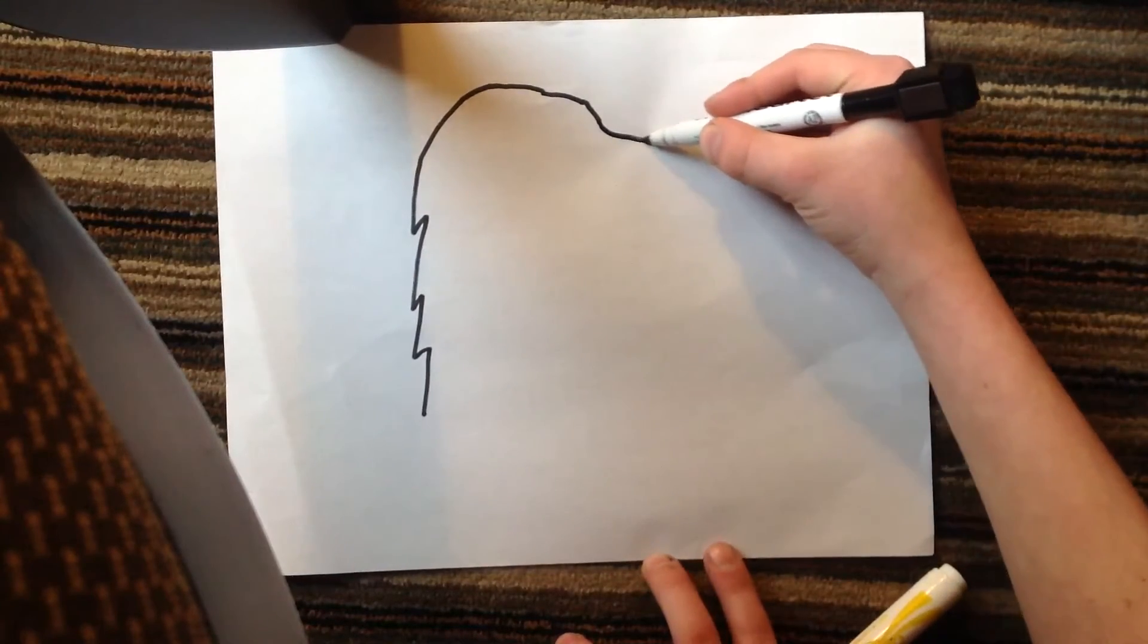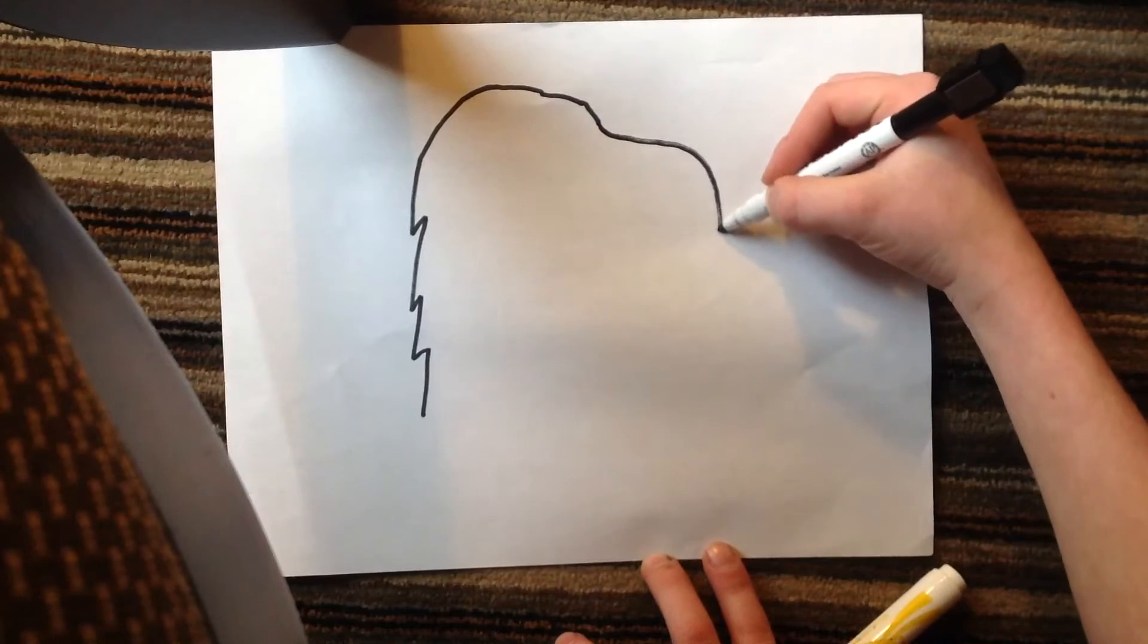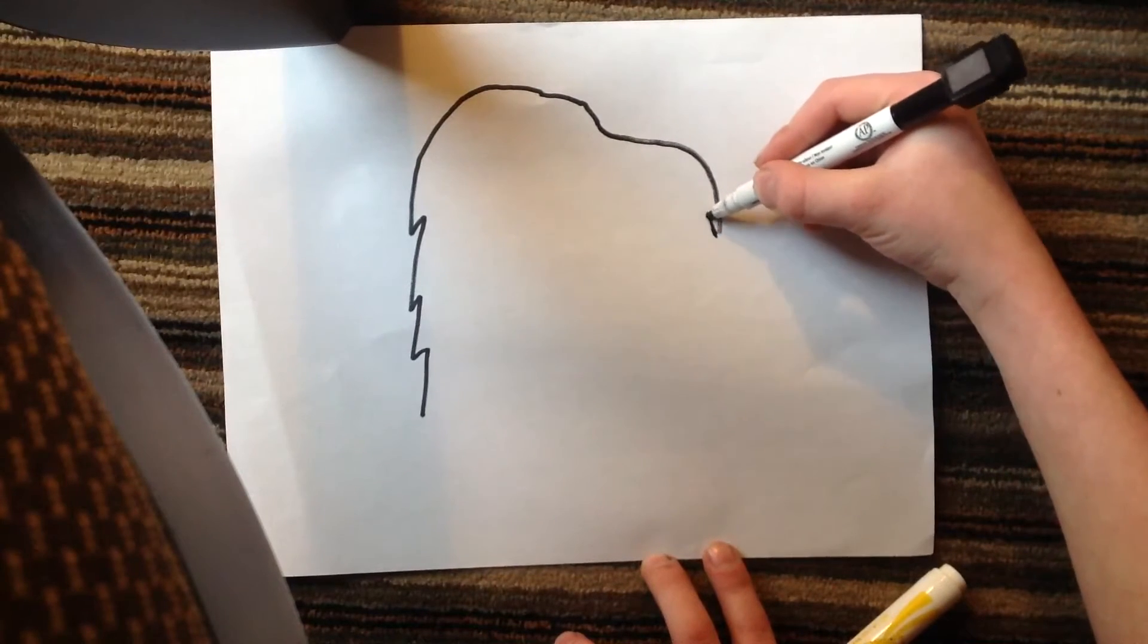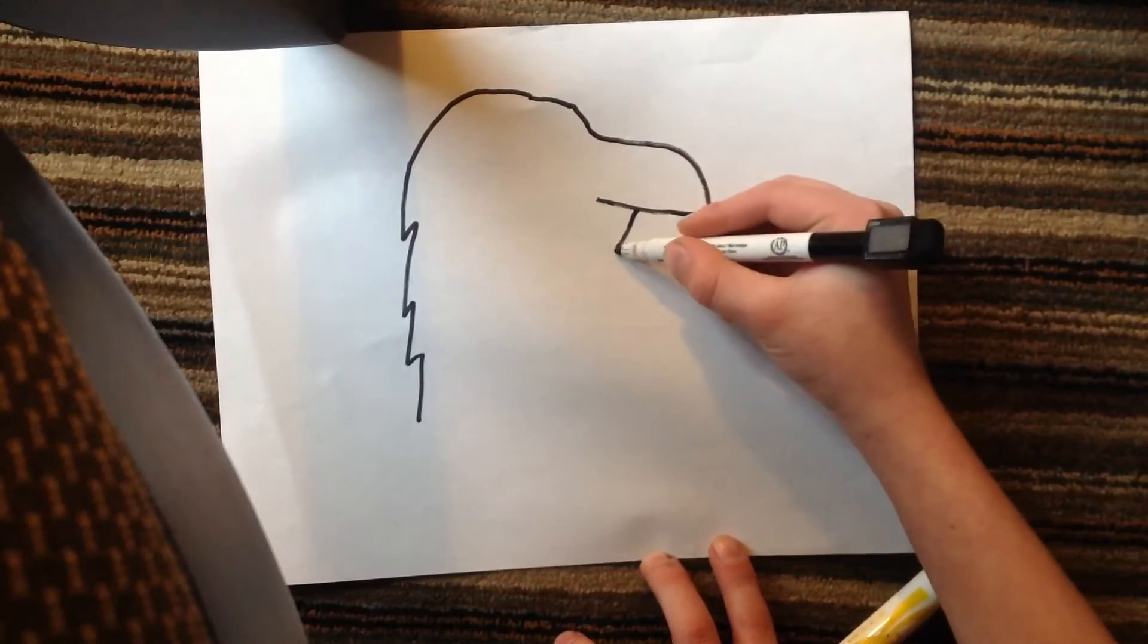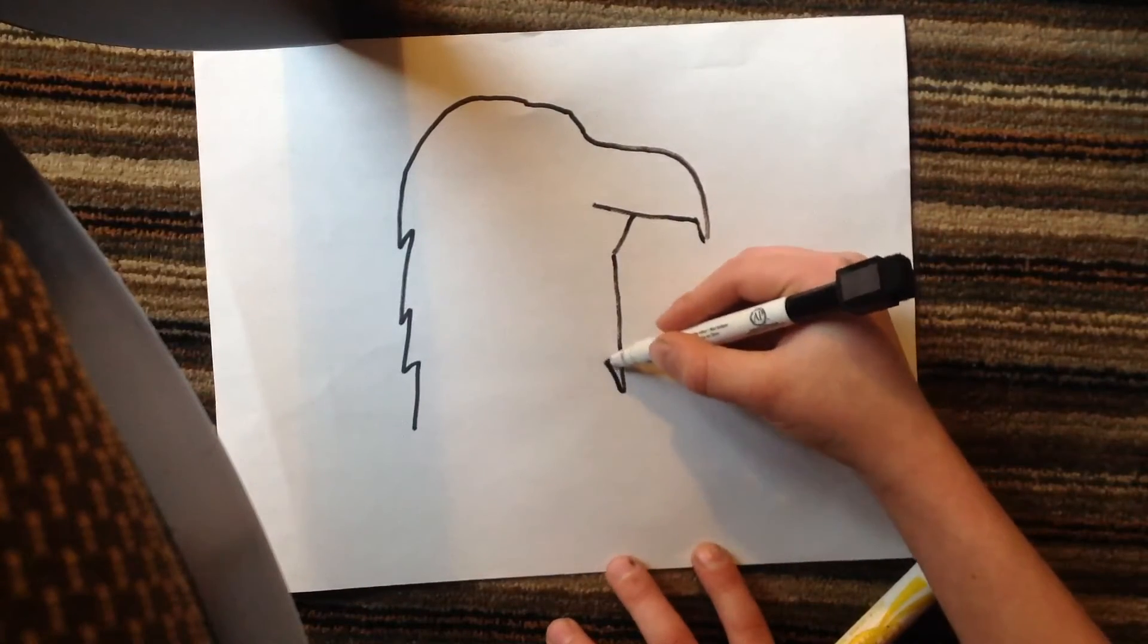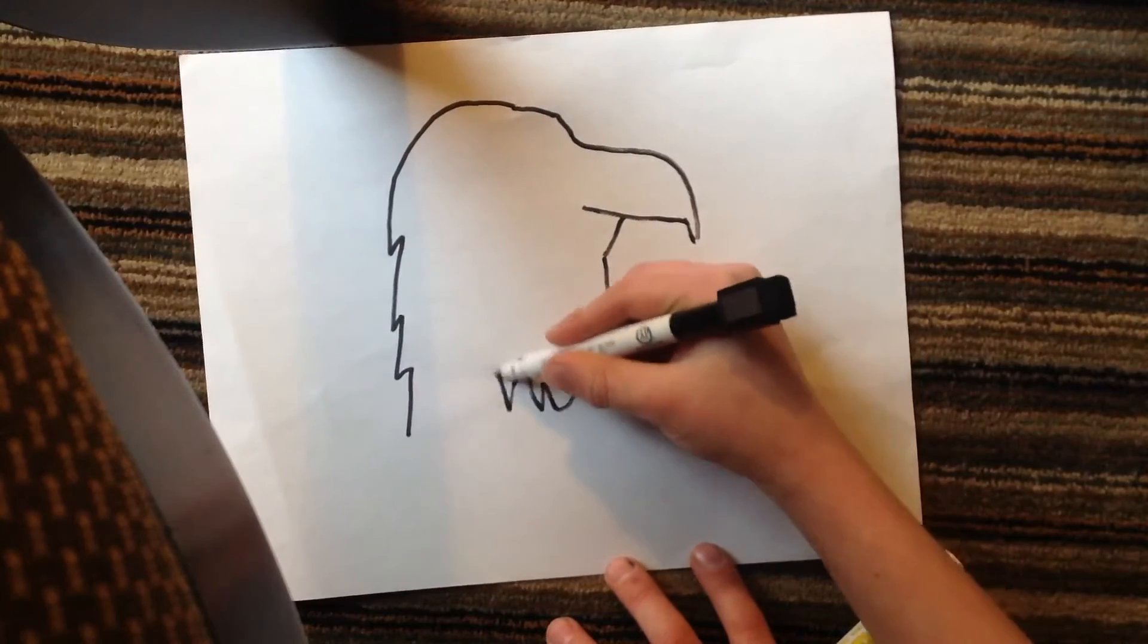Then come out for the beak. Go out a little, come down, go up a little bit and then go like that. Then you do a diagonal line, go down, do a bunch of little triangles, any shape you want.